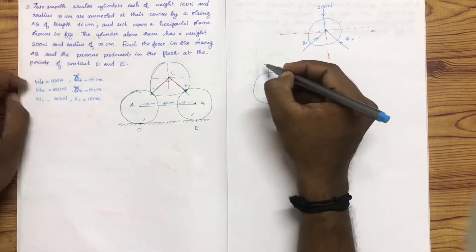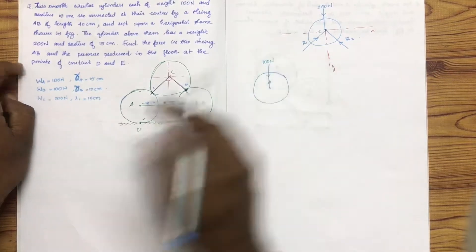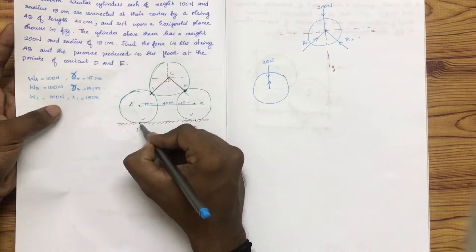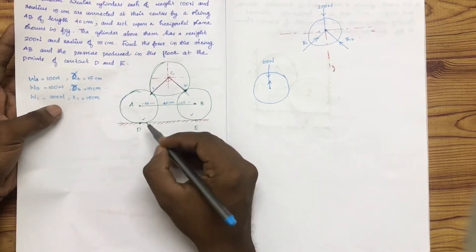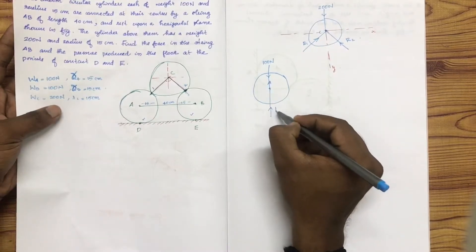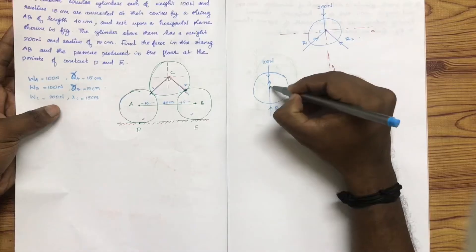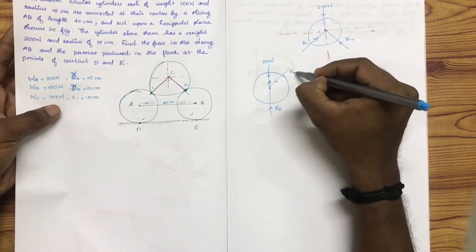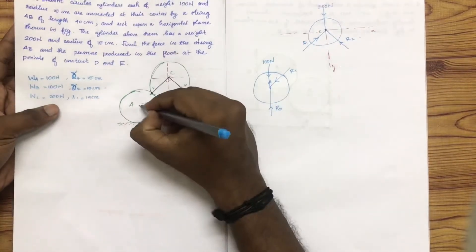We use weight WA equal to 100 N. The reactions are at points D and E — the reaction is R1 directed towards that body.